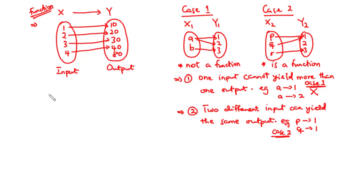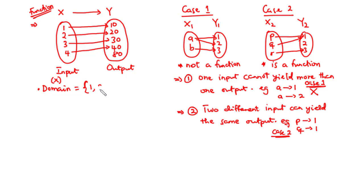A function has a domain, a range, and a rule of correspondence that assigns exactly one element of the range to each element of the domain. The domain of a function is the set of all values that make the function defined, and it is usually the set of x values. Looking at our function, the domain values are 1, 2, 3, and 4.